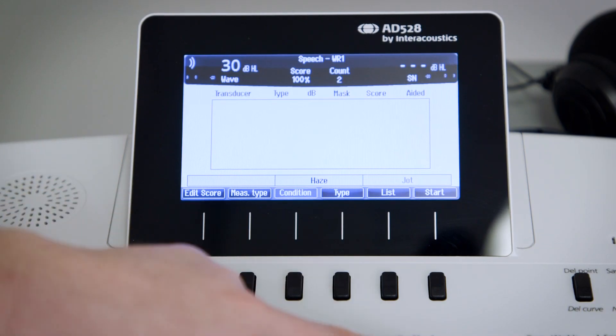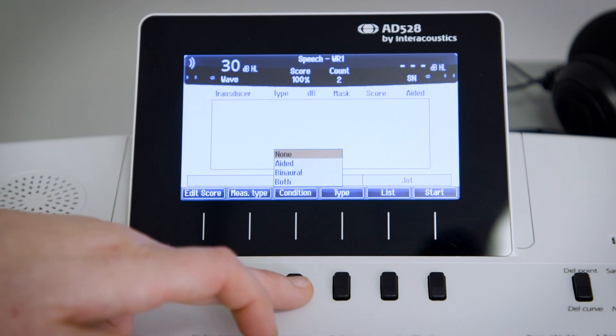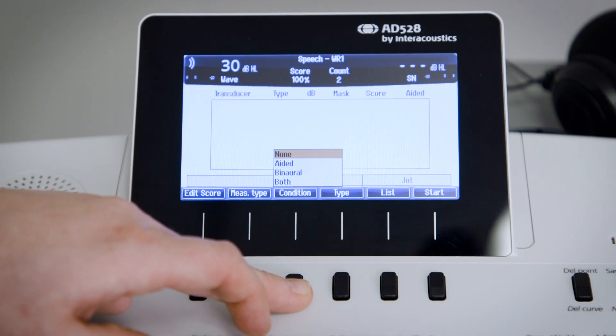The condition key can be used when you are in free field for setting the aided condition, you can use it binaural so that you present on both ears, or you can do it where it is both aided and binaural.